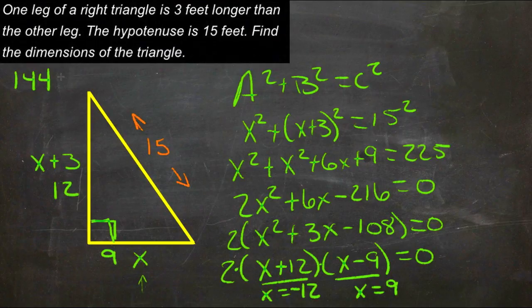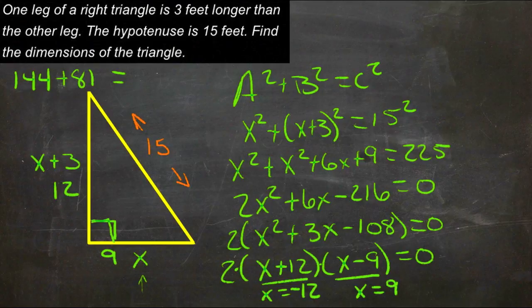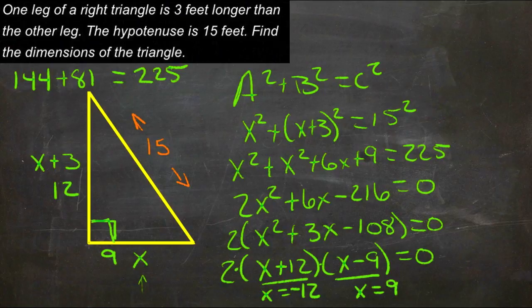144 and 81 is 225, so that works. We have our sides are 9 and 12.